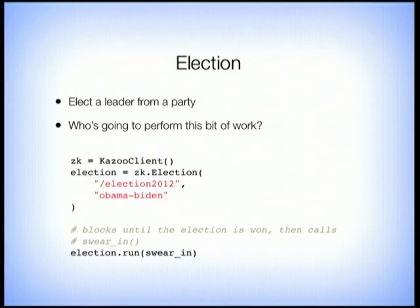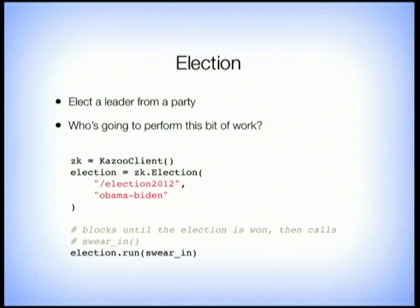Election is another great pattern — who's the leader of a party? Who's going to perform this bit of work or coordinate these workers? Homogenous workers all meet at a known location, 'election_2012'. My worker identifier is 'Obama_Biden', and we've got a number of other people running for election. When we call election.run, ZooKeeper helps us identify who the leader is and then runs a callback function — the 'swear_in' function.